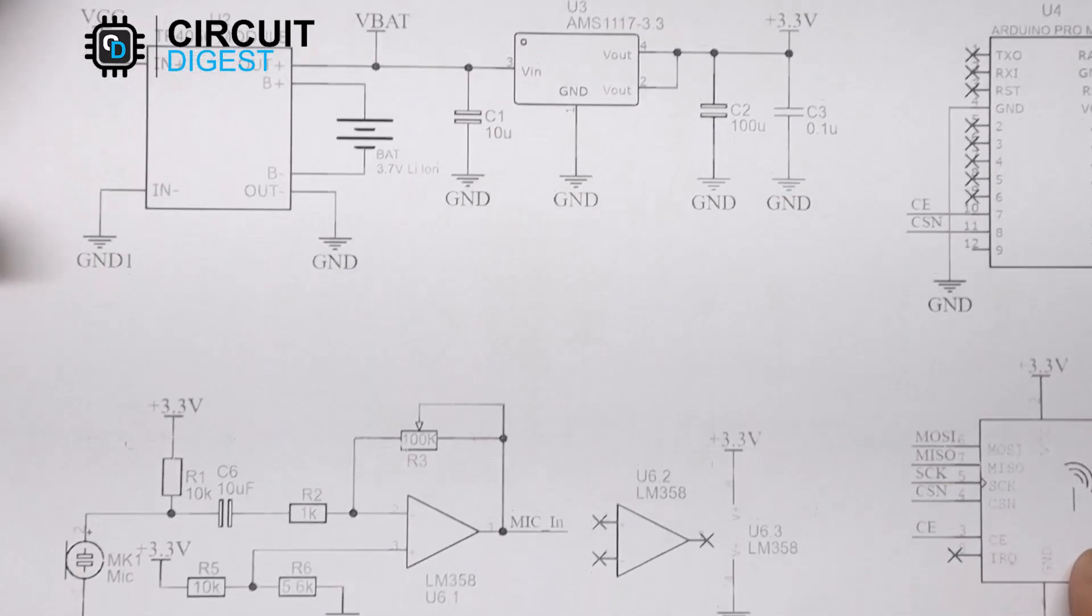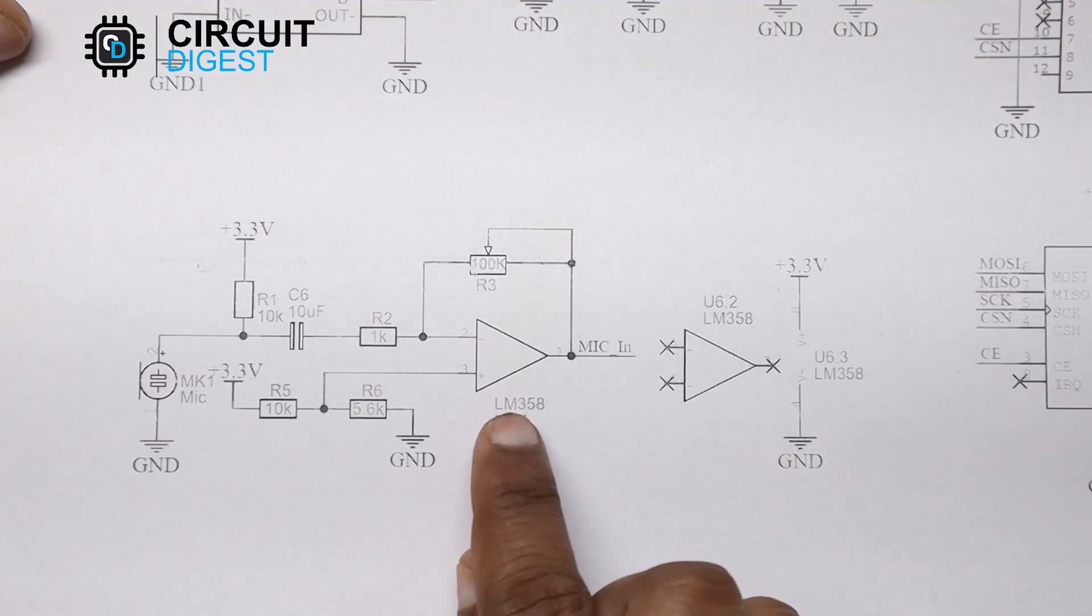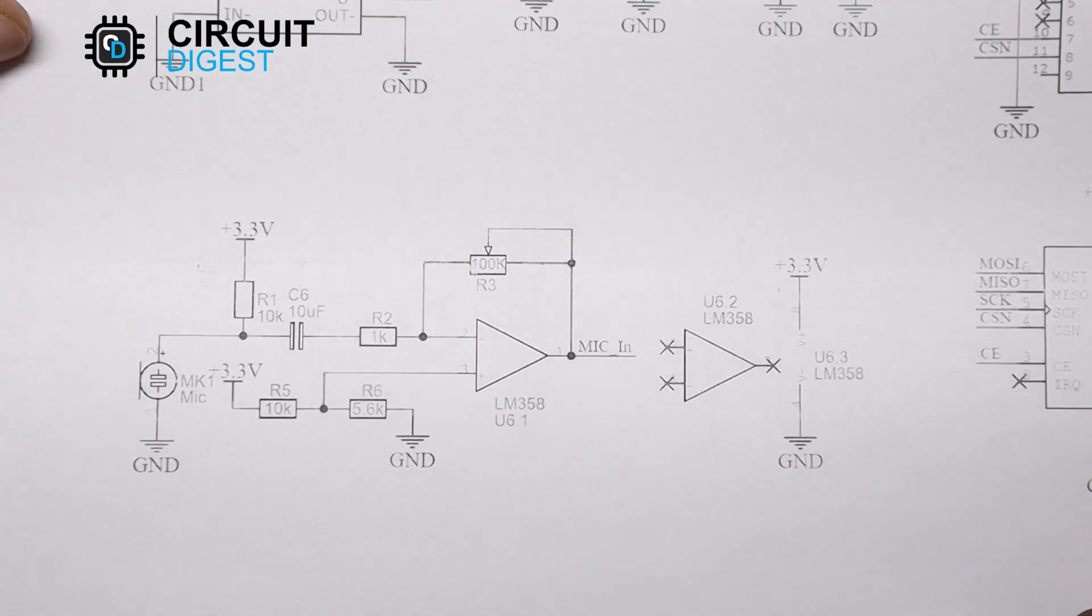The second section consists of the microphone and the pre-amp circuitry. The microphone pre-amp is built around the common LM358 op-amp IC. It will amplify the weak signal from the microphone to a desired level. This amplified signal is then fed to the analog input pin A0 of the Arduino Pro Mini.